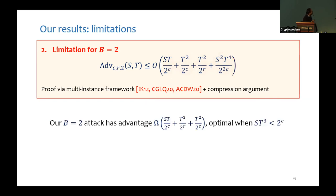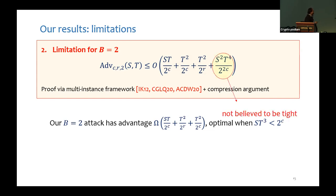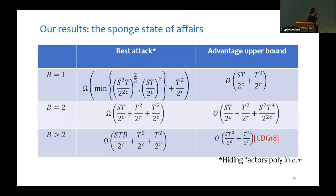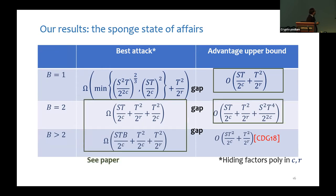This result also shows that our attack for B equals 2 is actually optimal when S·T² is less than 2^c, and we believe the last term in our bound is not tight and there is room for improvement. Summarizing after our work, for all values of B there are gaps between the best attack we know and the best limitation we can prove. For the rest of the talk, I will cover our new attack for finding one-block collisions.